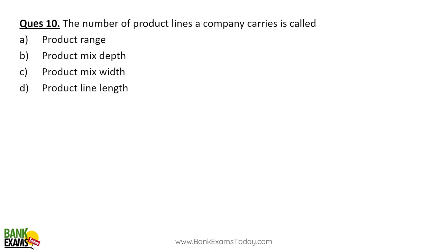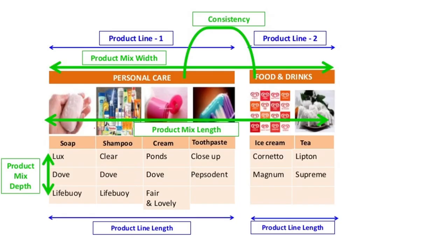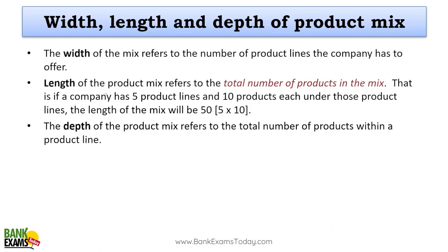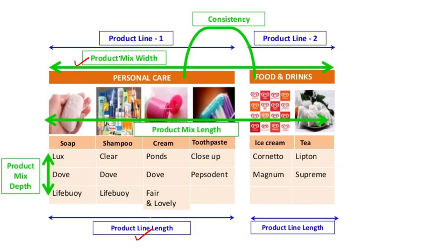The number of product lines a company carries is related to product mix concepts. Let's explain: there is product mix width, product line length, and product mix depth. For example, HUL (Hindustan Unilever Limited) produces soaps, shampoos, creams, and toothpaste in personal care, and ice cream and tea in food and drinks. They have brands like Lux, Dove, and Lifeboy.